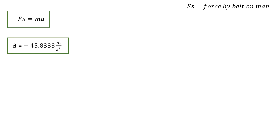Now that we have both equations, let's substitute. Minus Fs is equal to the mass of the man times the acceleration. So we have that minus Fs is equal to 64 kilograms times negative 45.8 meters per second squared.